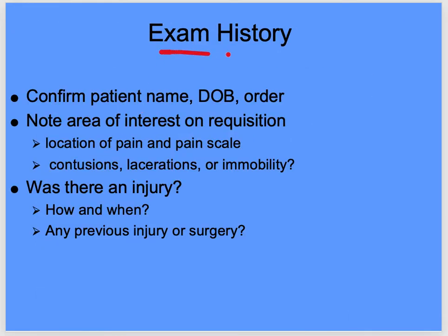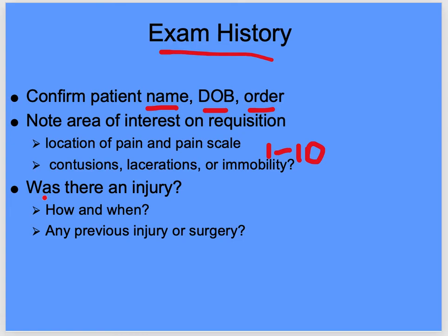For exam history, confirm the patient name, date of birth, and order. When you call them, use their last name first, verify their wristband, bring them to the room, have them state their name and date of birth while you look at the wristband, and verify the order. Always note the area of interest, location of pain, pain scale one to ten, and check for contusions, lacerations, or immobility.